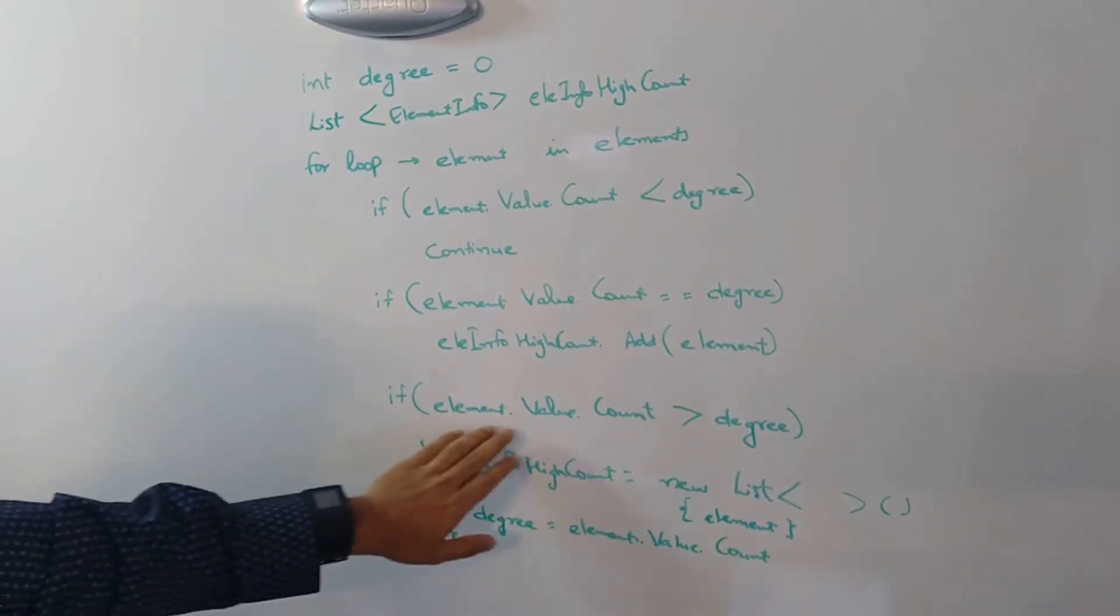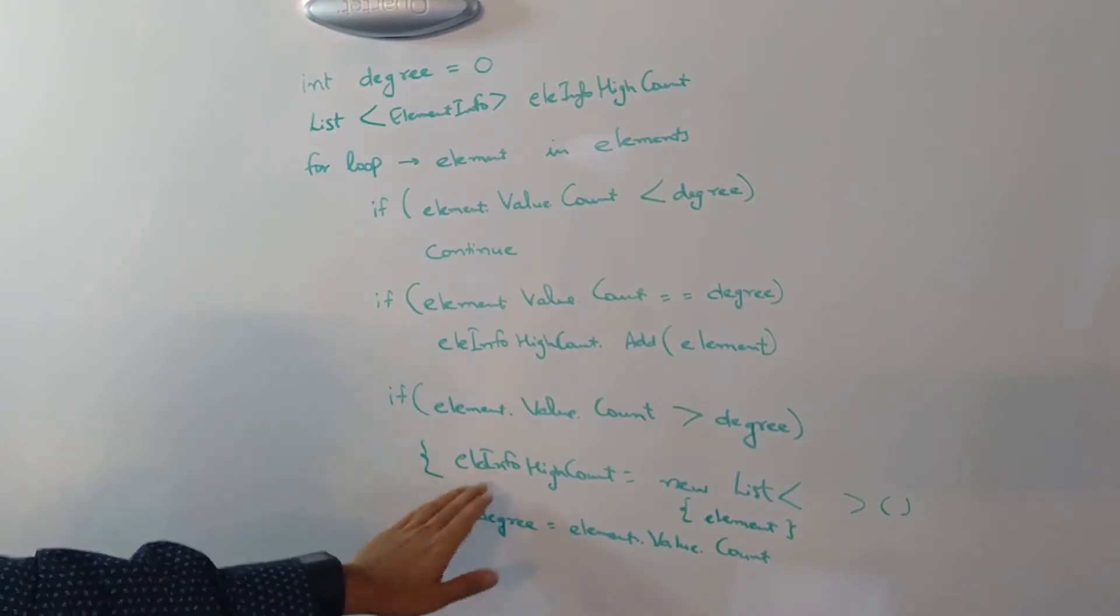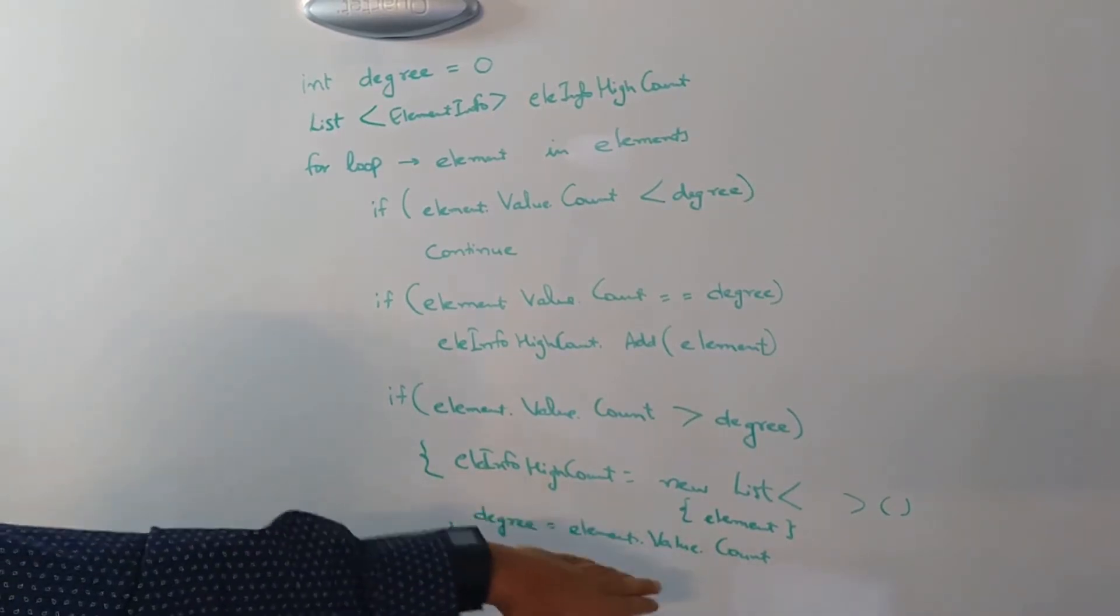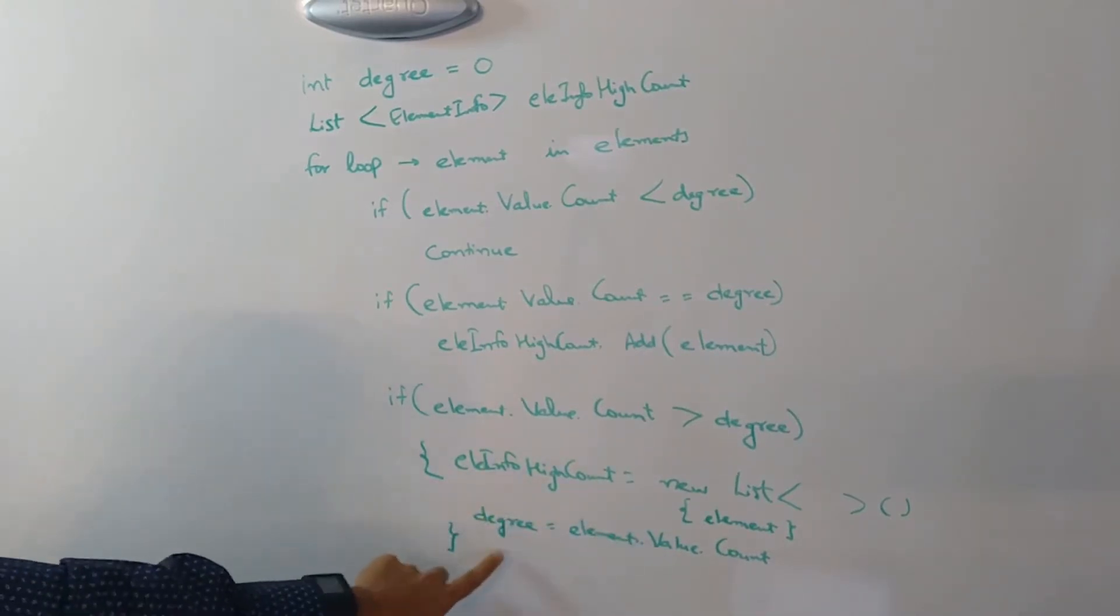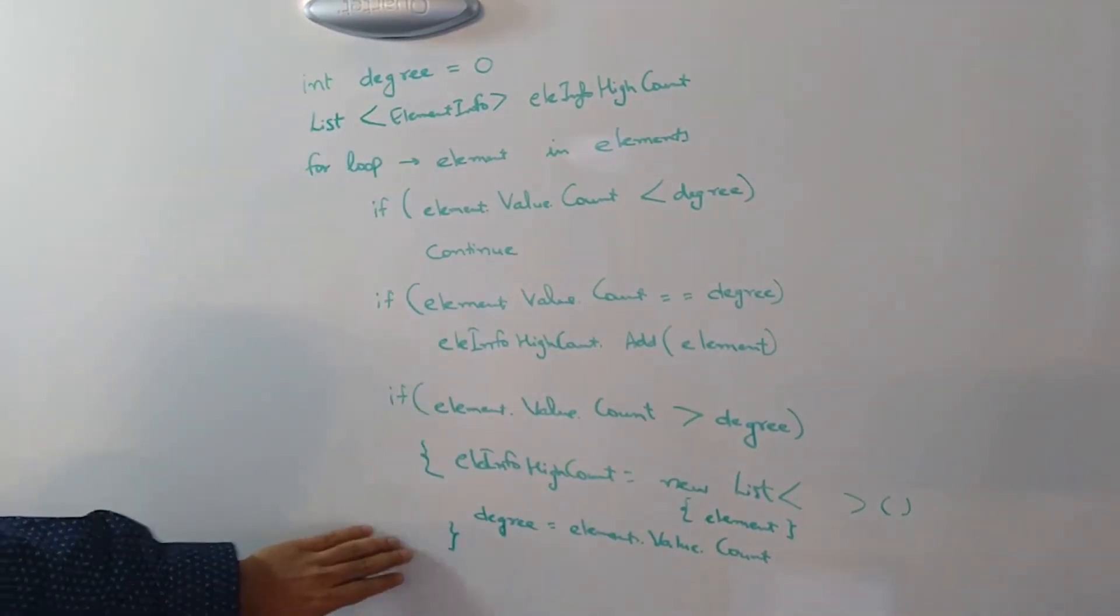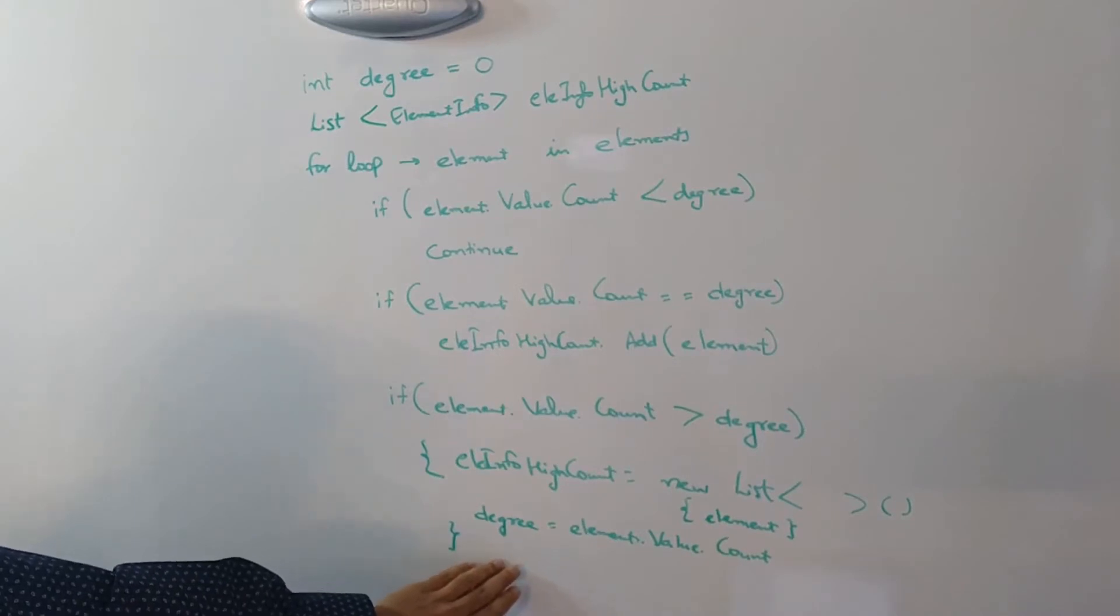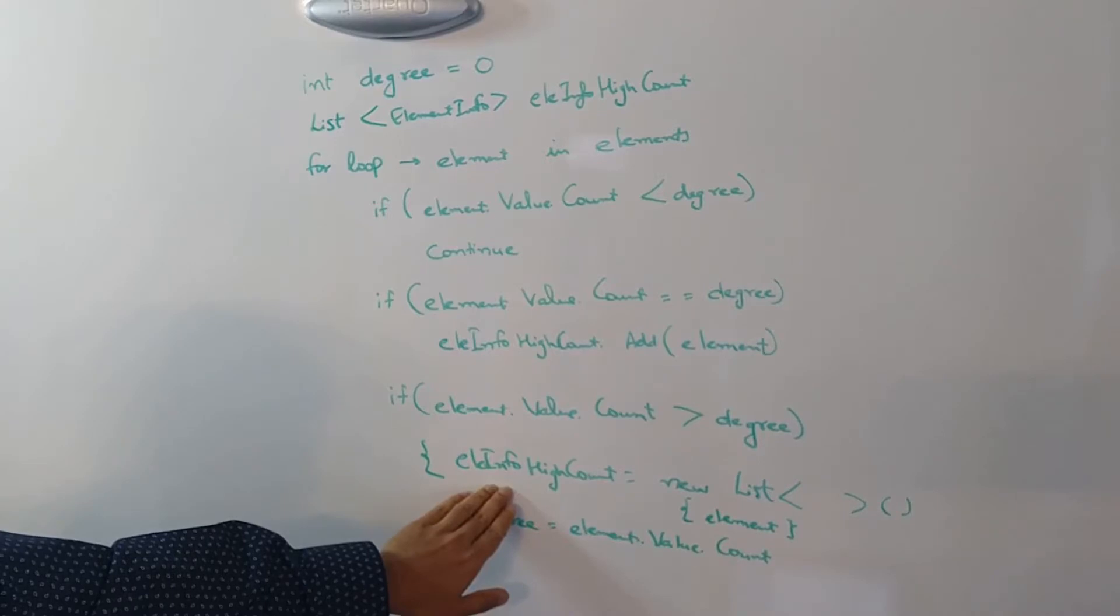Next if the element value count is greater than degree, at that time we basically erase the list and make sure that we instantiate a new list with that specific element and we update the degree to the new element dot value dot count. So at the end of this code, we will have the degree of the array as well as the list of element infos which have that highest count.